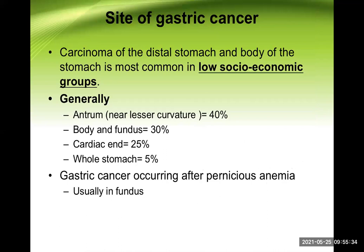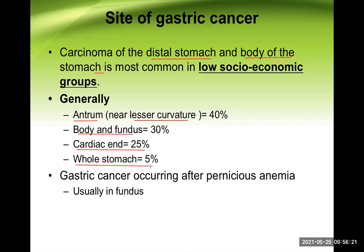Regarding site of gastric cancers: carcinoma of the distal stomach and body of the stomach is most common in the low socioeconomic group. The antrum near the lesser curvature accounts for about 40% of cases, body and fundus about 30%, cardiac end around 25%, and throughout the whole stomach about 5%. This last condition, involving the whole stomach, is known as linitis plastica or leather bottle stomach.